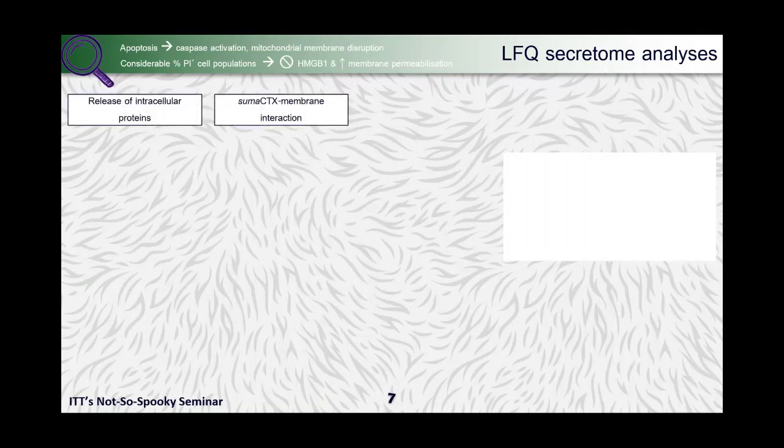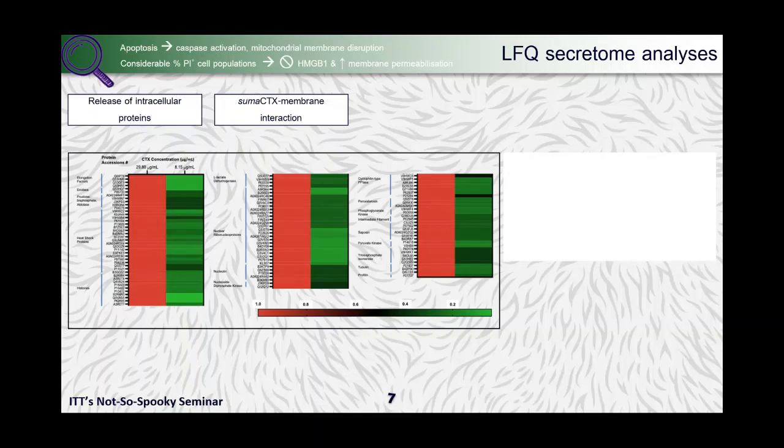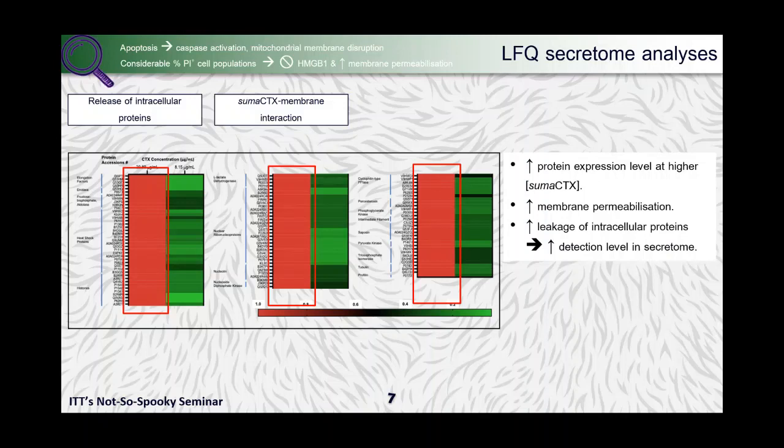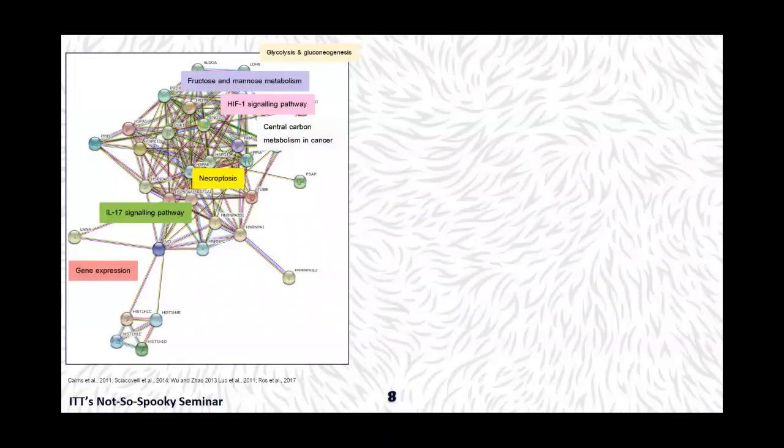From the LFQ, it actually indicates the release of intracellular proteins following membrane permeabilization, whereby at higher toxin concentration, as shown in this heat map, the red color here shows a higher expression level of the proteins, which indicates membrane permeabilization. Why is it so? Because an increased leakage of intracellular proteins due to increased membrane permeabilization results in an increased detection level of the secretome. We then performed the pathway analysis to identify the differentially expressed proteins and the role of these proteins in different pathways.